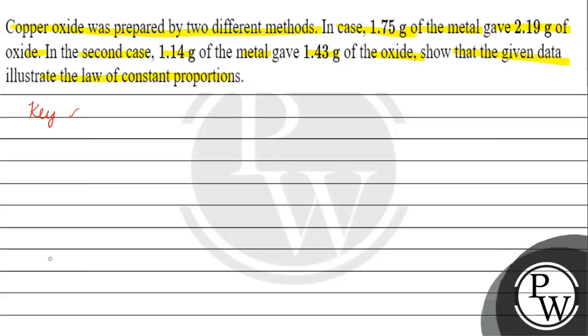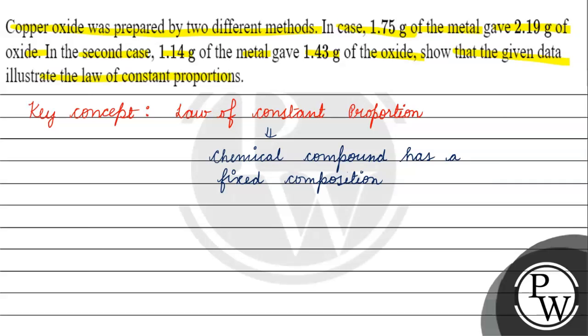Key concept for this question is Law of Constant Proportion. Law of Constant Proportion basically says that a chemical compound has a fixed composition, and it does not depend on the method of preparation or the source from which it has been obtained.